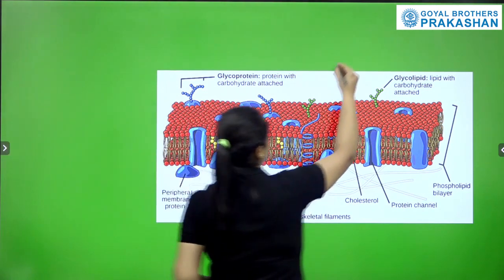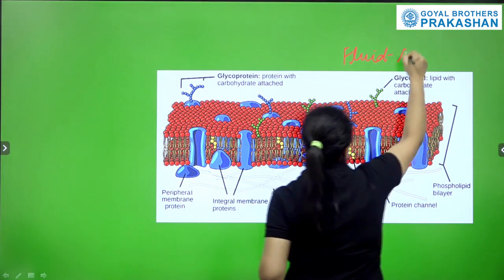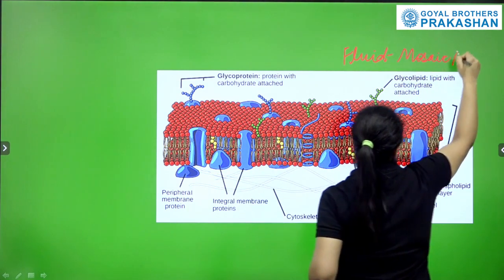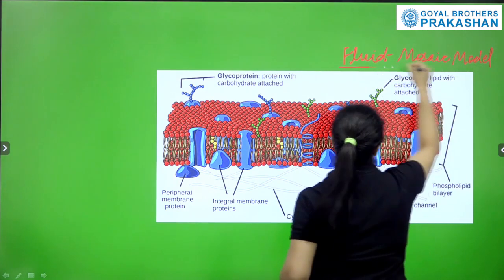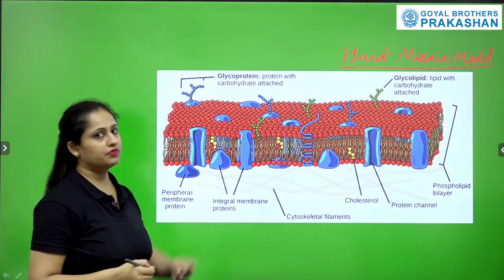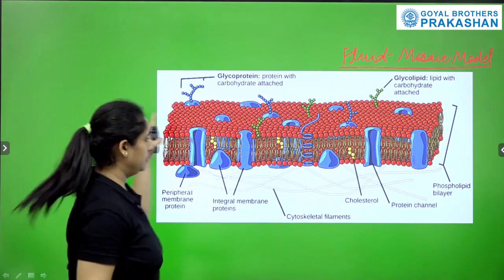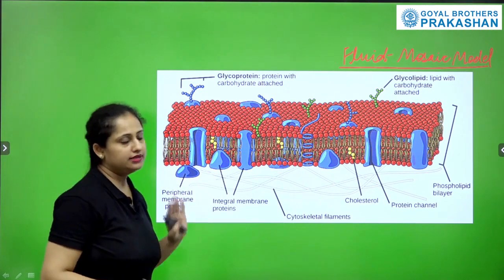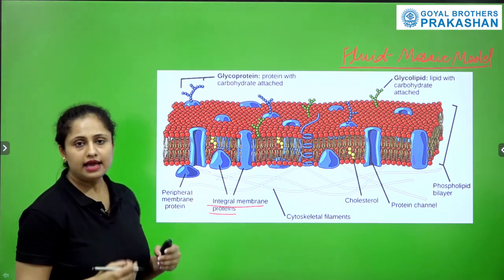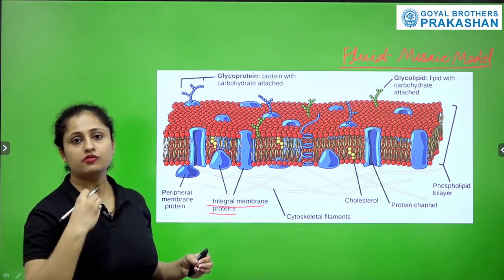This structure is known as the fluid mosaic model. Here we can see that the outer side of the membrane contains some proteins — integral membrane proteins are present. These proteins help the membrane to pass certain types of molecules.